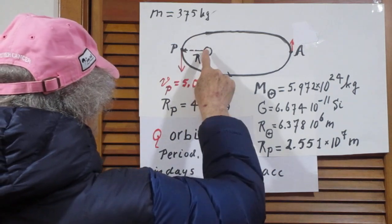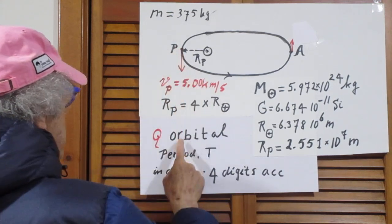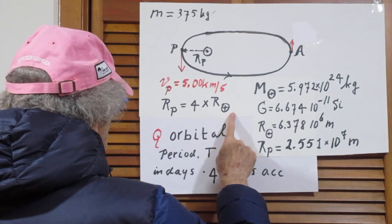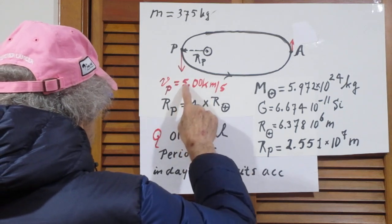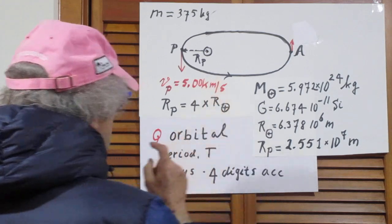The distance from the center of the Earth to the satellite at perigee is four times the radius of the Earth, and the speed at that moment is 5.00 (you can add two more zeros) kilometers per second.